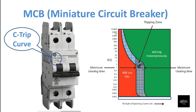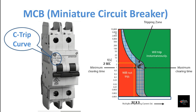The tripping curves of MCBs are denoted by alphabets such as B, C, D, K, and Z, along with their rated current. It's easy to understand from the curve at which current the MCB will trip. For example, for a 32A MCB, if 1.5 times the rated current flows, the MCB may trip in about 50 seconds. But if 3 times the rated current flows, it may trip in 2 seconds.